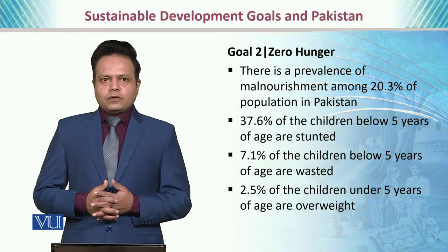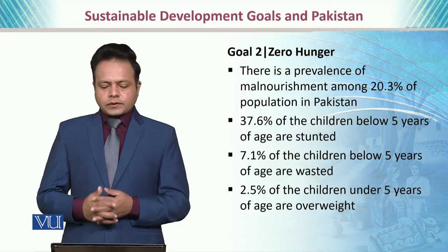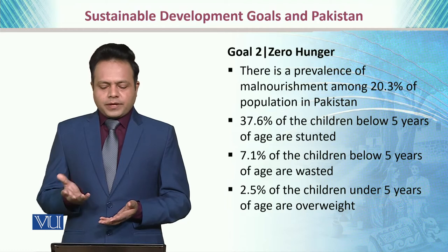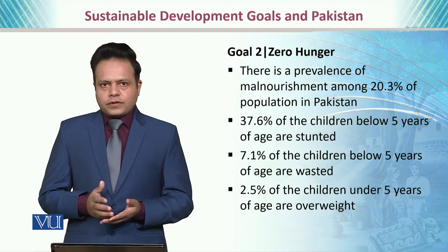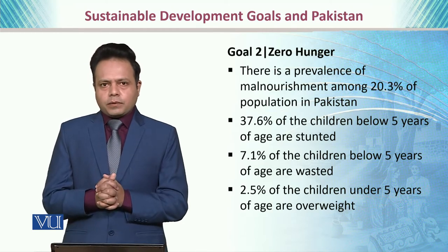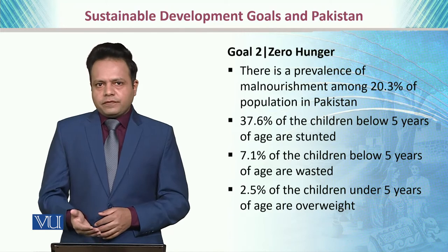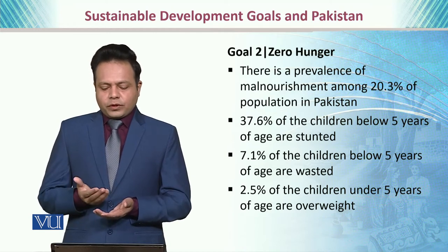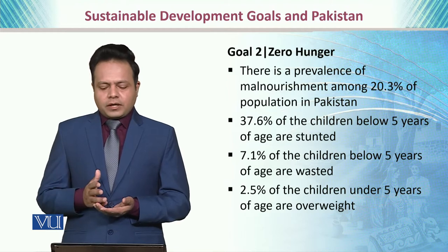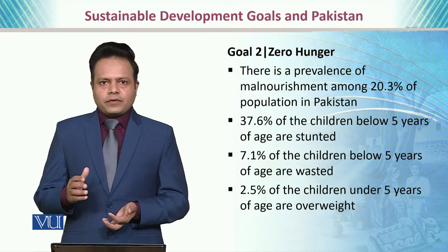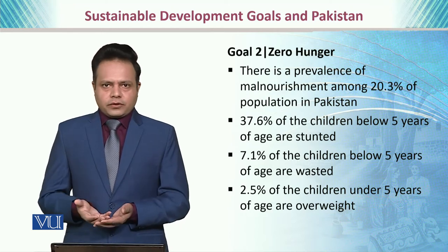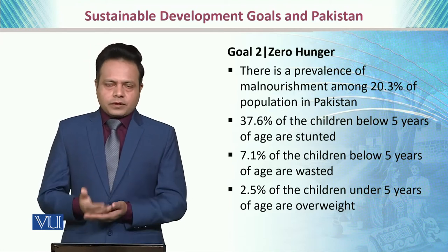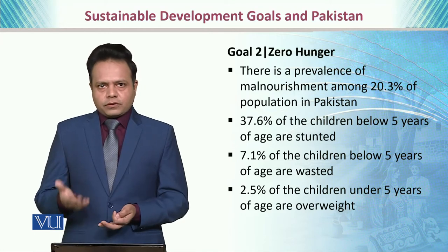The second goal is zero hunger. There is a prevalence of malnourishment and malnutrition among 20% of the population of Pakistan, which is a significant chunk. In other words, every fifth citizen of Pakistan is facing malnourishment. 37.6% of children under age five are stunted, not well physically grown or developed, principally because of malnourishment.